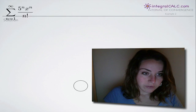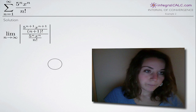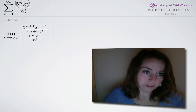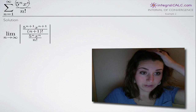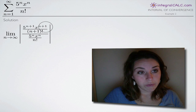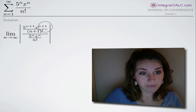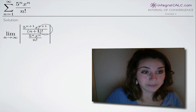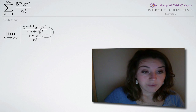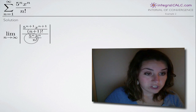As with any interval of convergence problem, the first thing that we're going to do is everywhere where we see n in our original function, we're going to substitute n plus 1 and divide that whole thing by the original function. You can see here in the top half of our fraction, we've substituted n plus 1 for n and then we divide that whole thing by our original function.